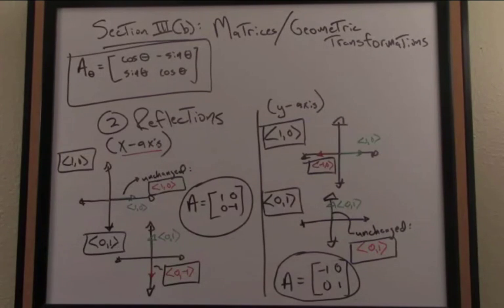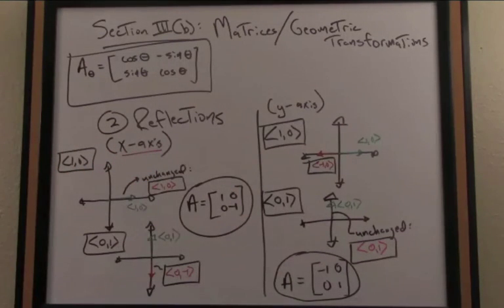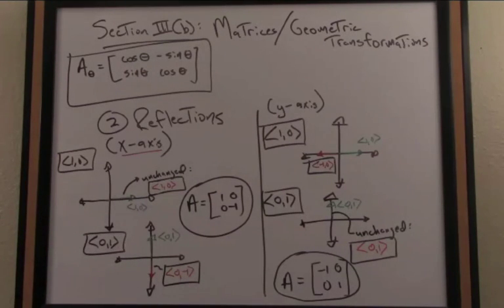So I've here drawn those actions for two different reflections. On the left we have the x-axis reflection, on the right we have the y-axis. So in each case I have two sub-cases, right, I'm looking at the image of 1, 0, 0, 1 under these new actions, geometric reflection.